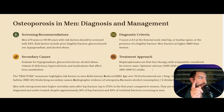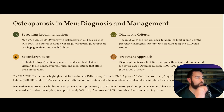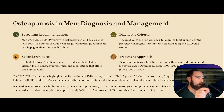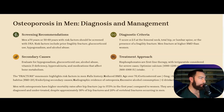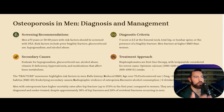Osteoporosis in men. Men aged 70 or older, or ages 50–69 with risk factors, should be screened with a DEXA scan. Risk factors in men include hypogonadism, glucocorticoid use (at least 5 mg prednisone equivalent daily for more than 3 months), alcohol use greater than 2 drinks per day, hypercalciuria, vitamin D deficiency, low BMI less than 20, and radiologic evidence of osteopenia. Diagnosis: T-score less than or equal to −2.5 at the femoral neck, total hip, or lumbar spine, or the presence of a fragility fracture.